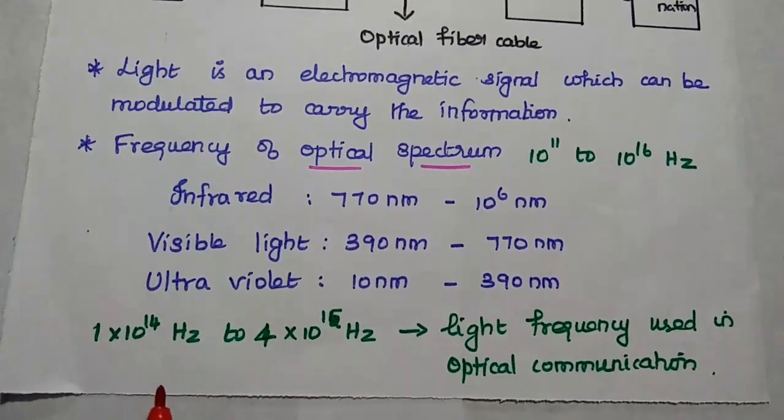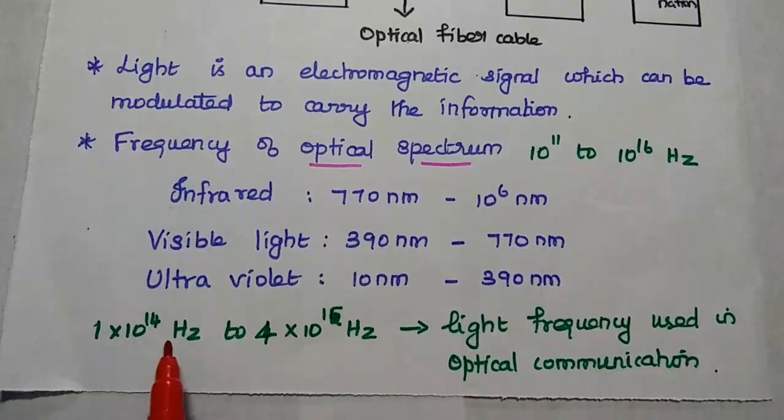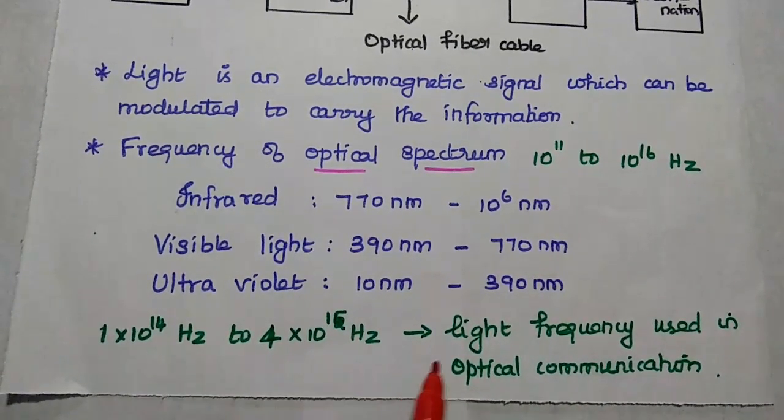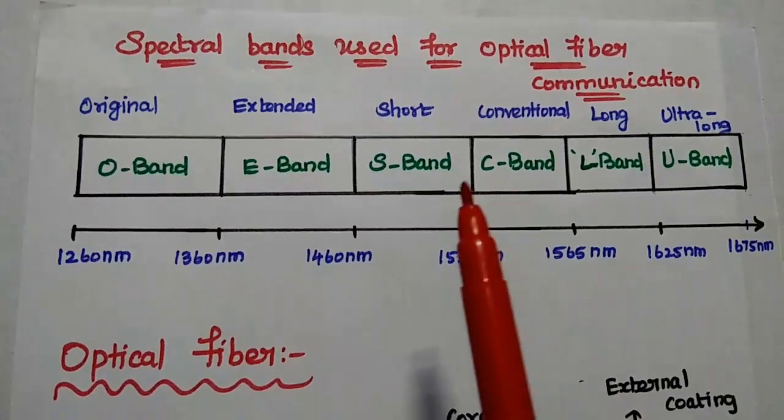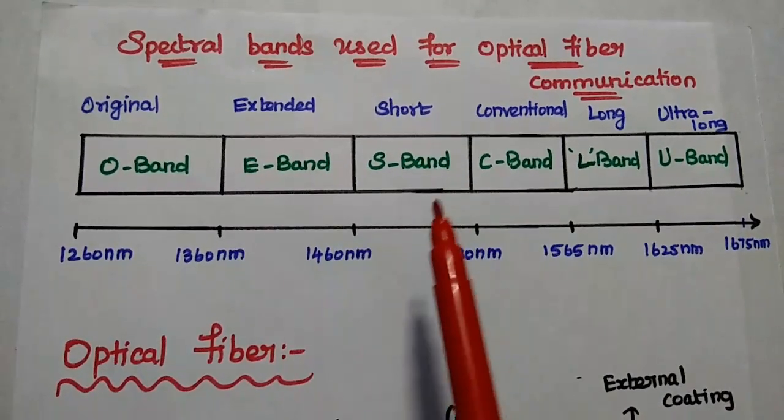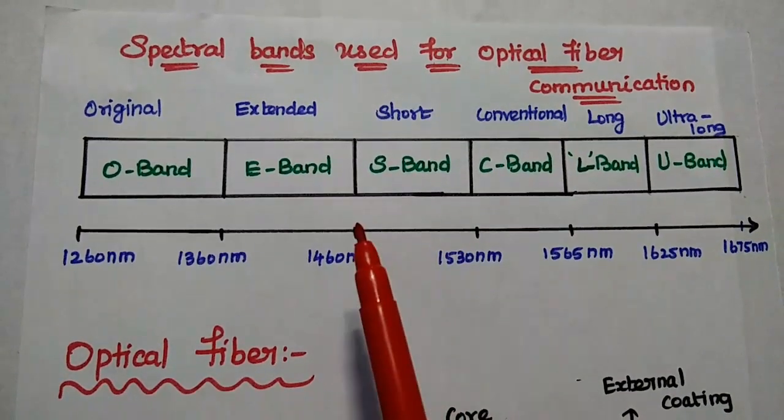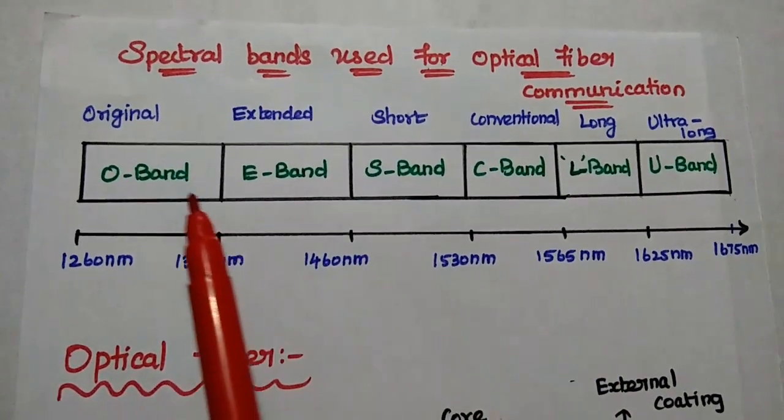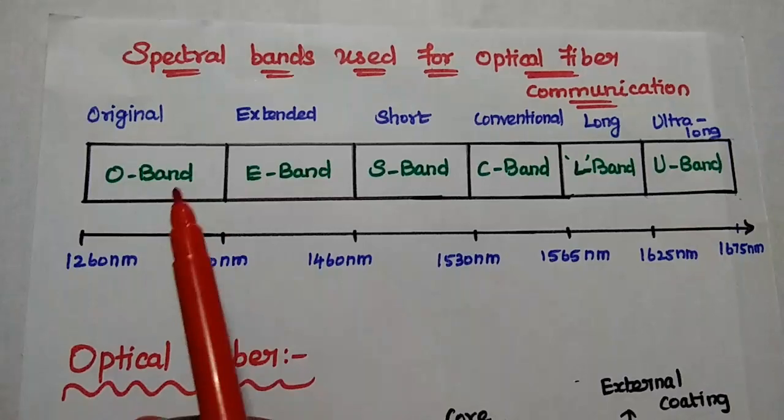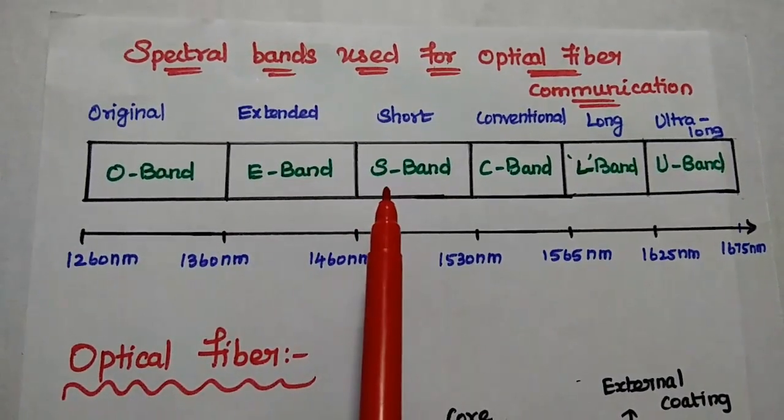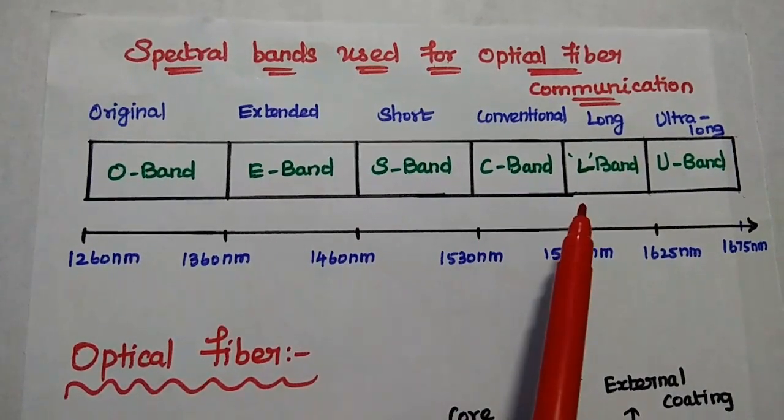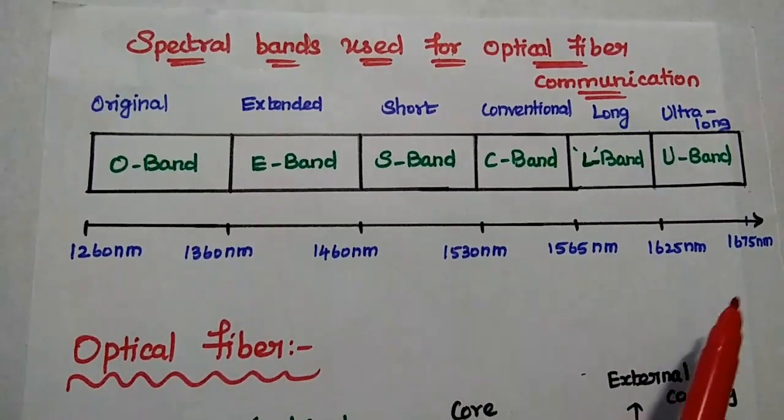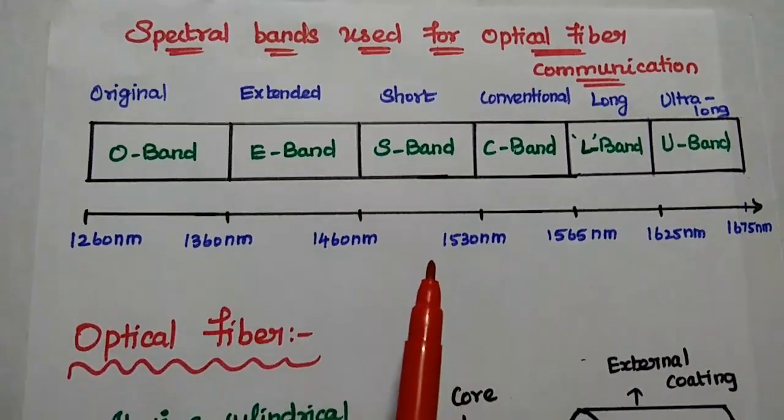In general, the range from 10 to the power 14 to 10 to the power 15 hertz is mainly used for optical communication system. Since the optical frequency is wider, there are different spectral bands used for optical fiber communication. The spectral bands are original band, extended band, short band, conventional band, long band, and ultra long band. These are the respective wavelengths for these bands.